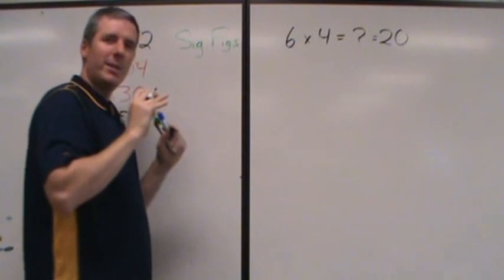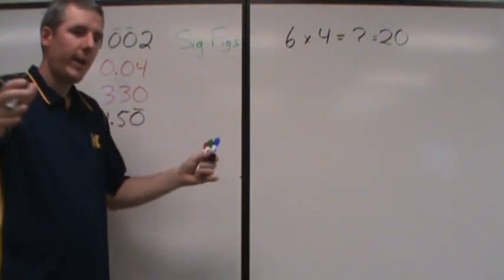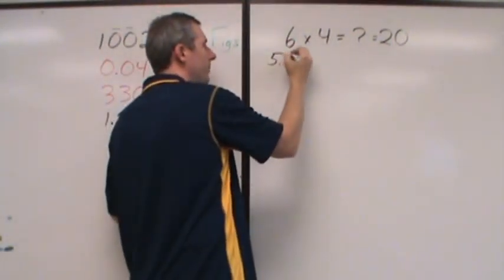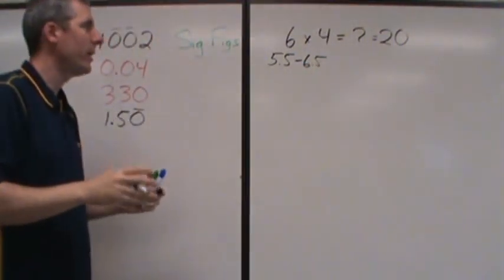When you say 6, what you mean is it's about 6, but I haven't measured it very well. I have an extreme range of uncertainty. So really, in measurement land, 6 means somewhere between 5.5 and 6.5. Somewhere in that range.